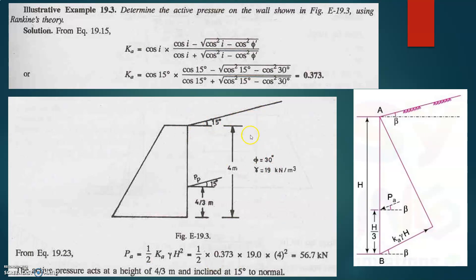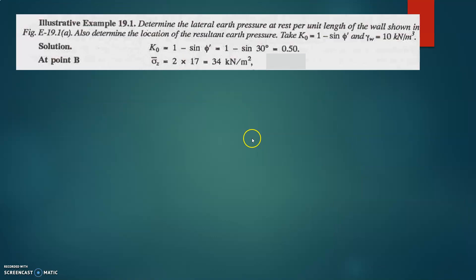I hope all of you understood. Let us take this next example, but you have to solve it — I will not solve this one. Try it and we will discuss if you have any difficulty. Determine the lateral earth pressure at rest per unit length of the wall shown in the figure. Also determine the location of the resultant earth pressure. Take K₀ equal to 1 minus sin phi, and gamma-W equal to 10 kilonewton per meter cube. Note: this problem asks for earth pressure at rest, not active earth pressure. K₀ equals 1 minus sin phi.